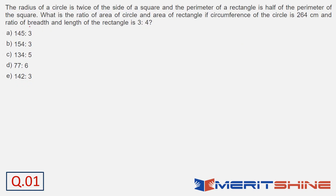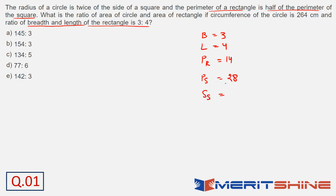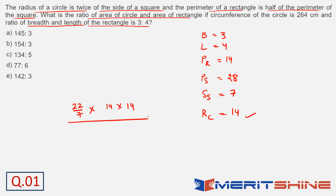Question number 1. Breadth and length of the rectangle are in the ratio 3 to 4. So if breadth is 3, length would be 4. Perimeter of this rectangle: 3 plus 4 is 7 into 2, that's 14. It says perimeter of rectangle is half of the perimeter of square, so perimeter of square would be 14 into 2, that's 28. Side of the square would be 28 by 4, that is 7. Radius of circle is twice the side of the square, so radius is 14. Area of circle is 22/7 into r squared — 14 into 14 — upon area of rectangle which is 3 into 4. This simplifies to 22 into 7, that's 154. So the answer is 154 by 3 — option B.